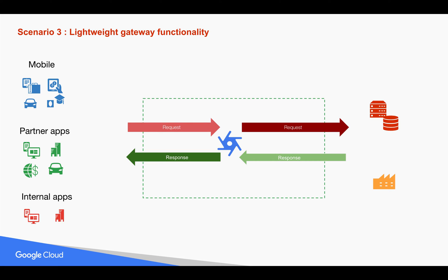The third scenario is where you have lightweight gateway functionality requirements — where you want to do some security like OAuth, throttling, or quota, but you don't have complex API management requirements like transformation or mediation, which are provided out-of-the-box by the full Apigee Edge cloud or on-premise. So you have lightweight gateway requirements where you want some functionality at the gateway level but not the full-fledged solution. In that case you can consider Apigee Edge Micro Gateway.